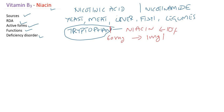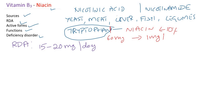This is with respect to sources. Coming to the recommended dietary allowance — the RDA of niacin is about 15 to 20 milligrams per day.